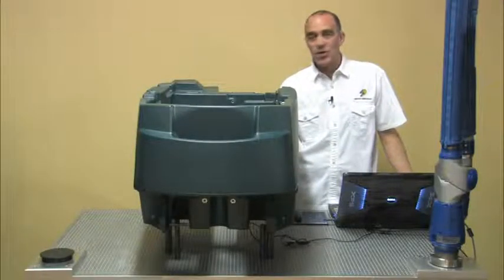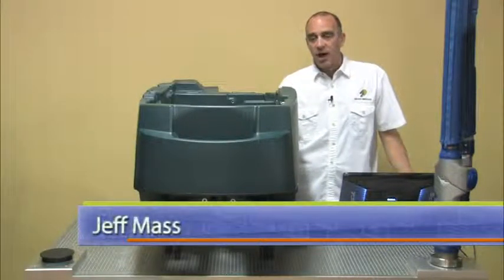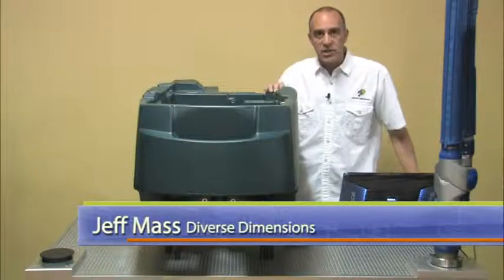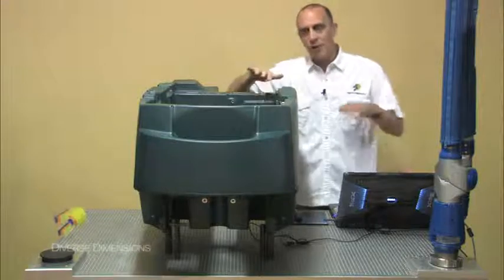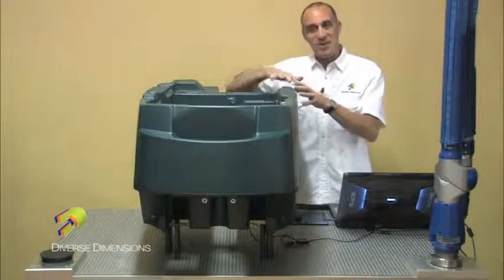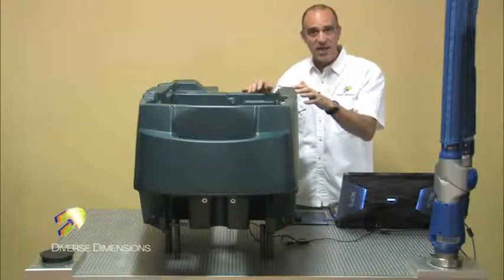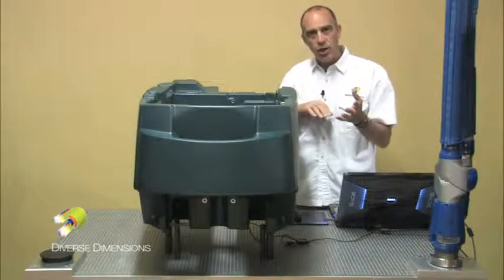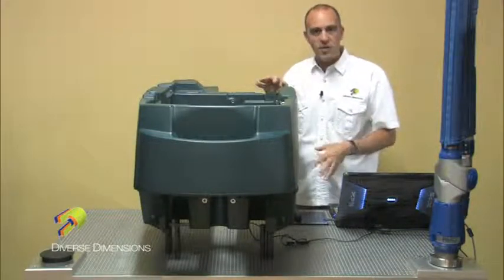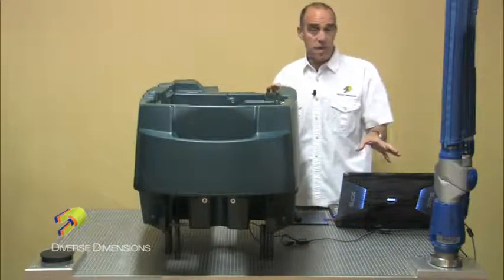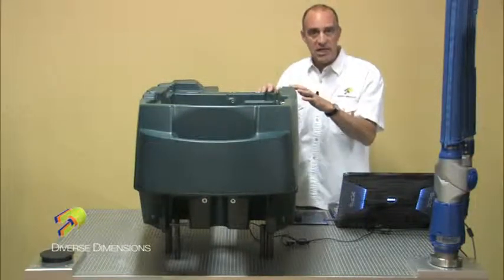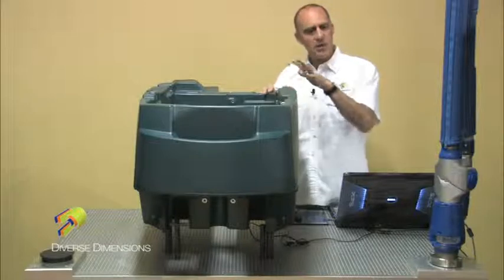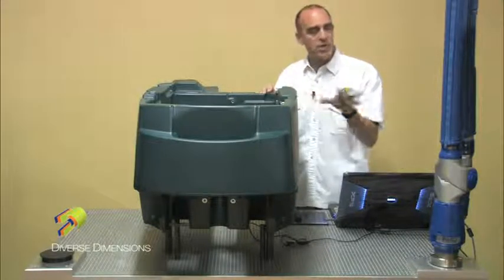What I'd like to do is show you how to do a leapfrog on this part. I've already gotten into an alignment using the iterative alignment and I've gotten all the features measured. I've measured everything that I can in this position. Earlier I knew I was going to do a leapfrog, so I positioned the arm the first time to capture all the datum references that I needed to get into the alignment and all the important features that I could reach in this position.